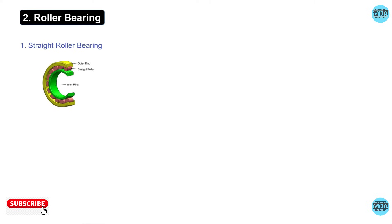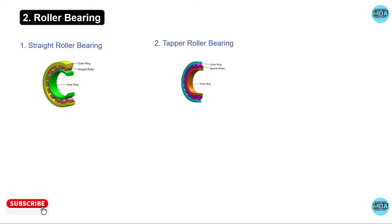The first type is the straight roller bearing, where cylindrical rollers handle the thrust coming from the housing. In tapered roller bearings, the rollers are arranged at an angle, so they can handle both axial and radial load forces.